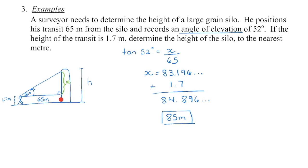That only gives us the height of the triangle; we need the height of the silo. So I add on the 1.7 meters. It says to round to the nearest meter. One important point: do not round until the end, especially with trigonometry — rounding too soon can change your final answer. Keep the value in the calculator until the very end, then round off.